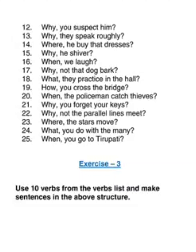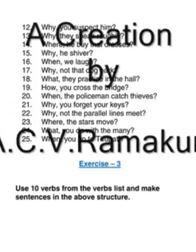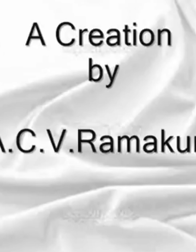Twenty-fourth: What do you do with the money? Last one: When do you go to Tirupati? That completes the WH questions in simple present tense for regular actions. Now you can do exercise three: use 10 verbs from the verb list and make sentences on your own. You will find that you can very easily make the sentences, showing that you have become confident in using WH questions in simple present tense. I hope you enjoyed the program. Thank you.